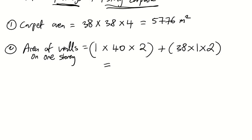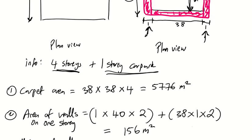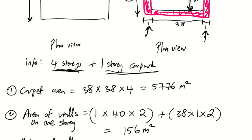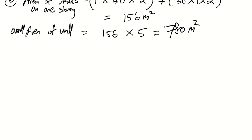You should get 156 square meters for one story. For the overall area of walls, that's 156 multiplied by 5 stories, because we have 4 stories that people can occupy plus the 1 story car park inside the building. That gives you 780 square meters. So we've calculated the carpet area and the area of the walls.